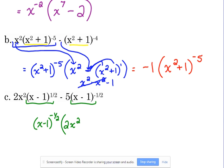Positive 1 half minus a negative 1 half. Subtracting a negative, same as adding a positive. So, that gives us x minus 1 to the first.